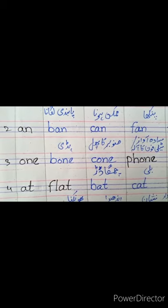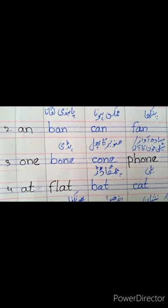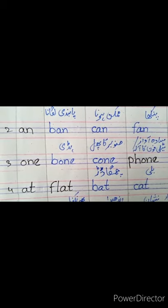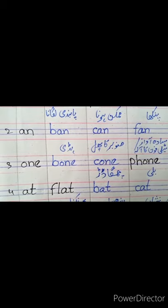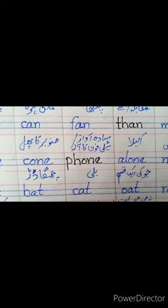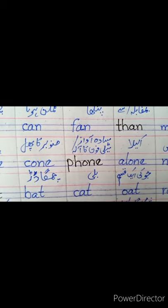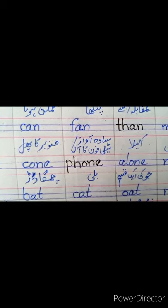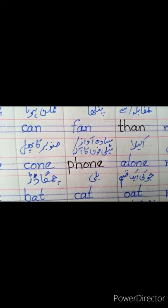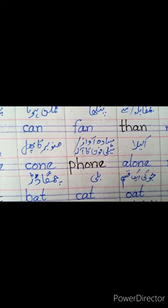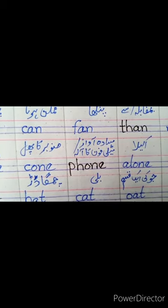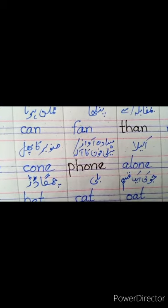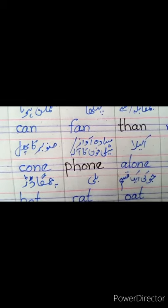Second is 'cone' — C, O, N, E. یہ سنوبر کا ایک پھل ہوتا ہے، اس کو ہم کہتے ہیں 'cone'. سنوبر درخت کا نام ہے. Third one is 'phone' — P, H, O, N, E. یہ زیادہ آواز کو کہتے ہیں، یا ٹیلی فون کو ہم کہتے ہیں فون.